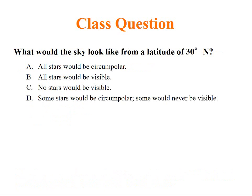What would the sky look like from a latitude of 30 degrees north? At 30 degrees north, some stars will be circumpolar and some would be never visible. All stars will be circumpolar at the north pole. All stars will be visible at equator.